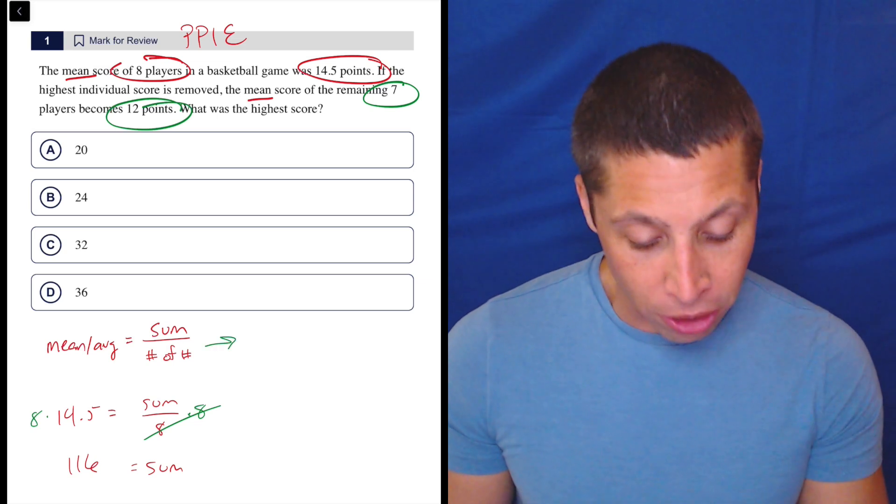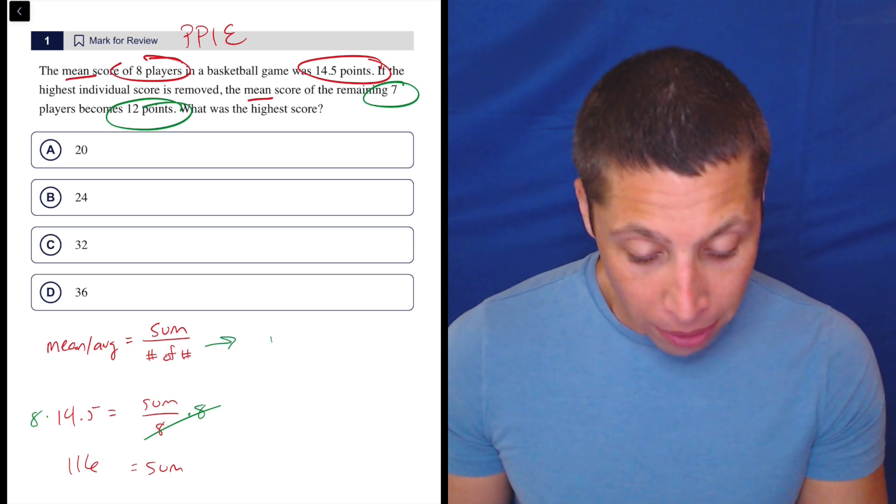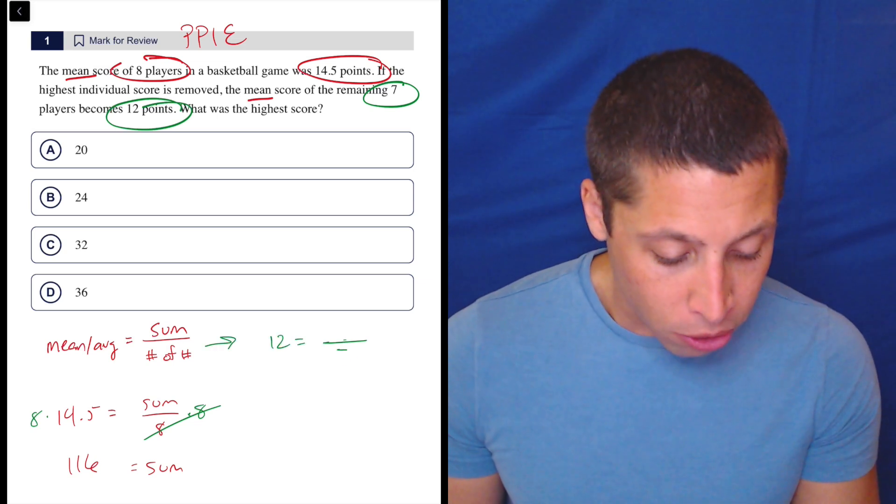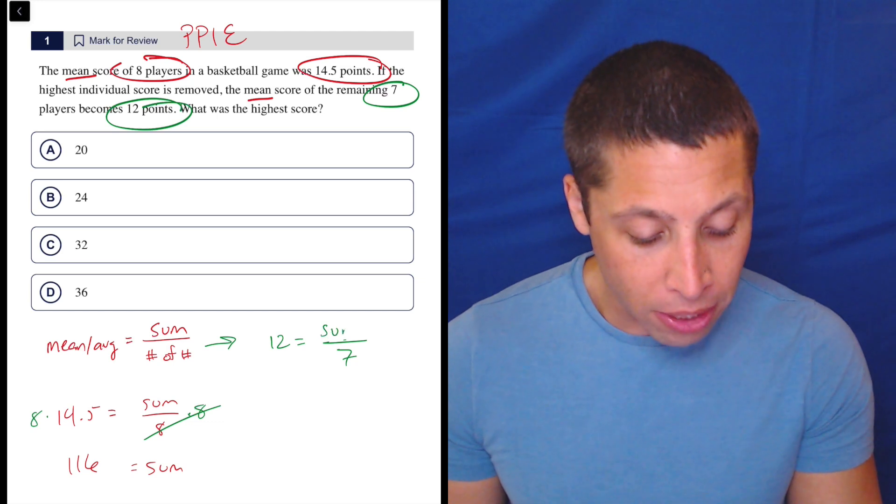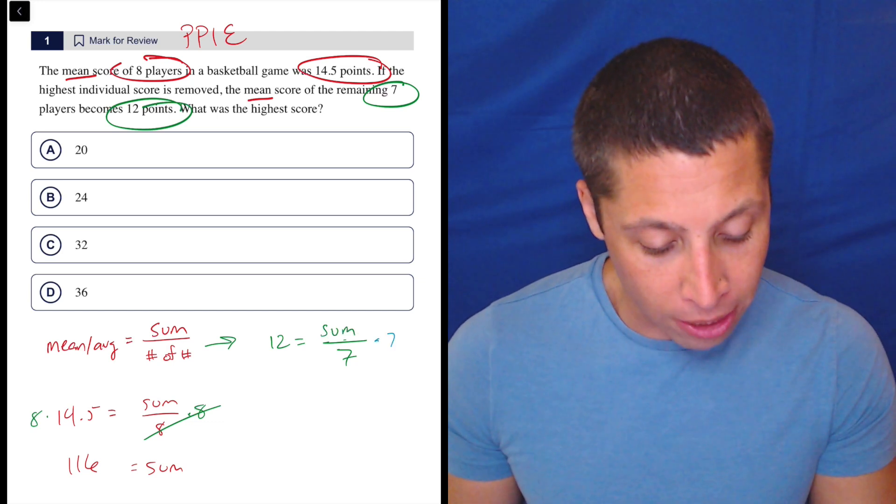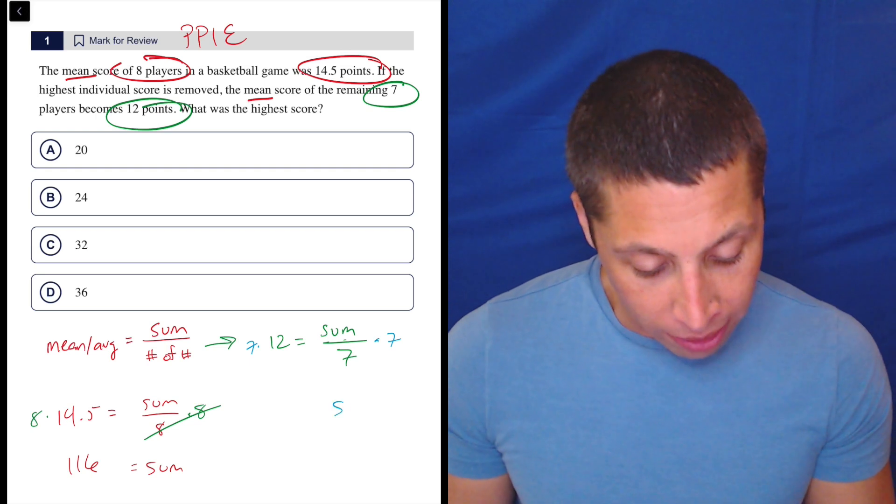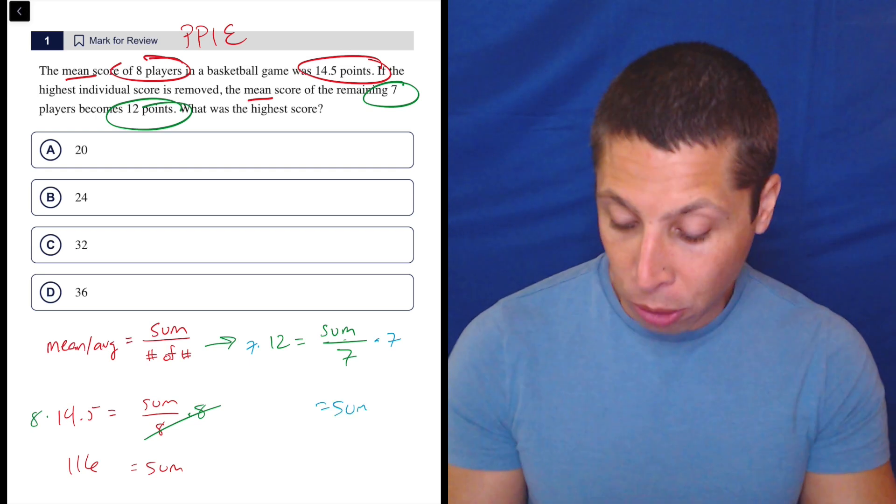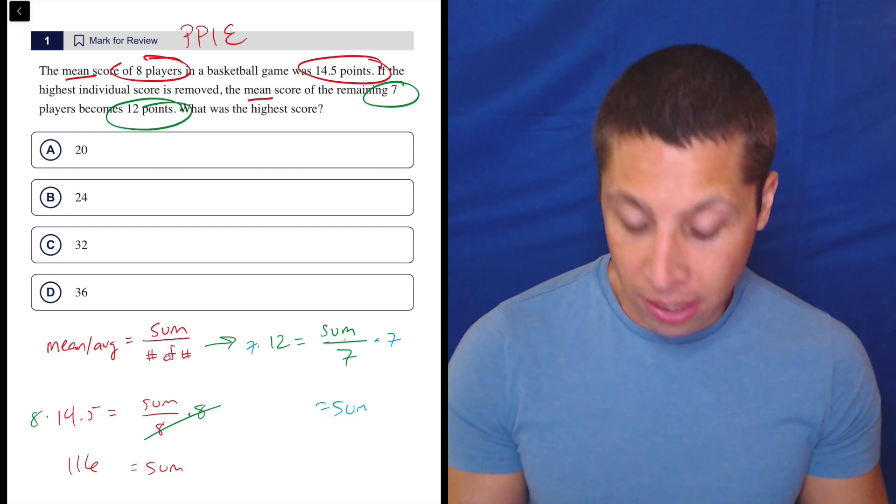So again, I can plug into this equation. The seven players have a mean of 12. So let's do the same thing. And now we have a different sum that we're solving for. So the same move happens. Let's multiply each side by seven and we get that the sum is 12 times seven is 84.